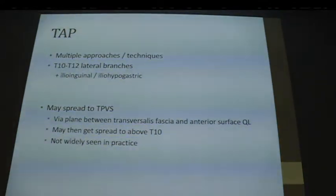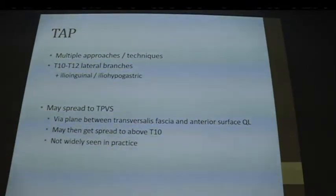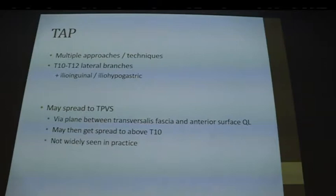The TAP block is quite interesting — it's had multiple reinventions over the years, starting from the triangle of Petit approach and then becoming an ultrasound-guided technique. A standard TAP block gives you lower abdominal sensory loss — T10 to T12 lateral branches — and you might also get ilioinguinal and iliohypogastric coverage. Interestingly, there are some blocks that rely on spread up to the thoracic paravertebral space. TAP block can even give spread up to the thoracic paravertebral spaces and possibly T10, but this requires quite a large volume and isn't widely seen in practice.